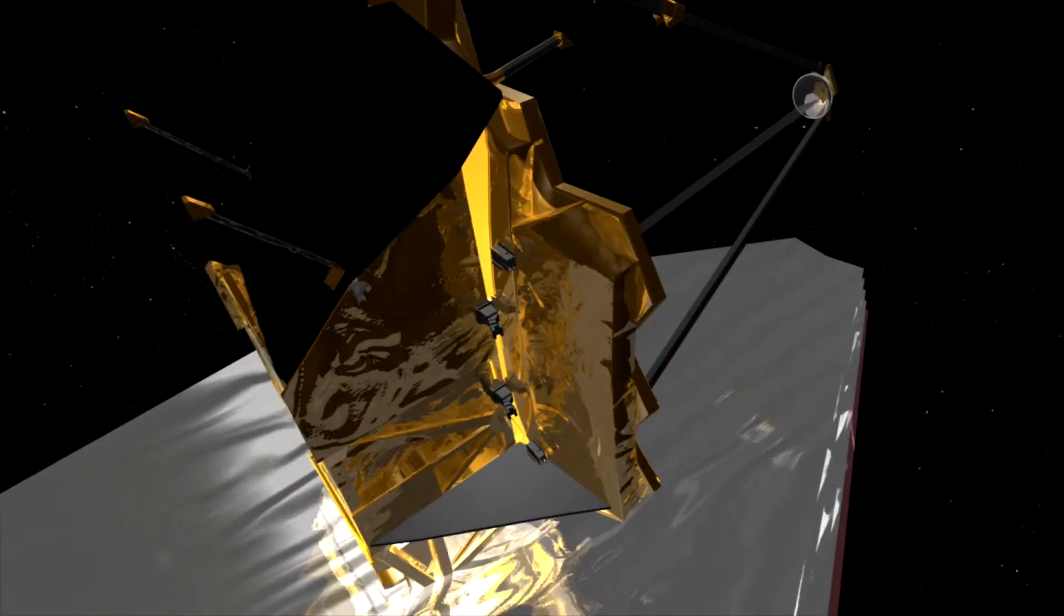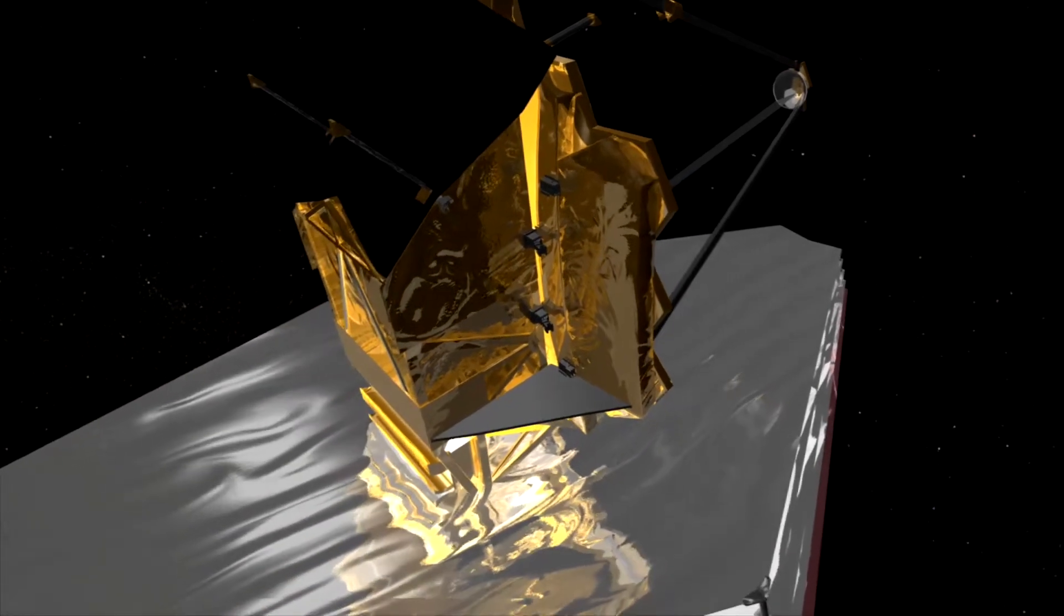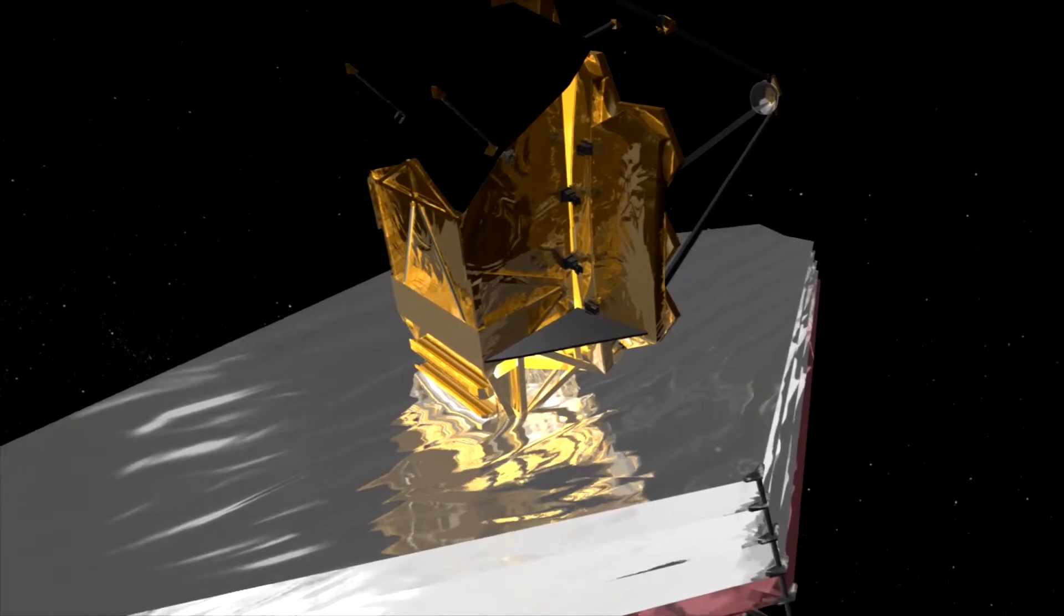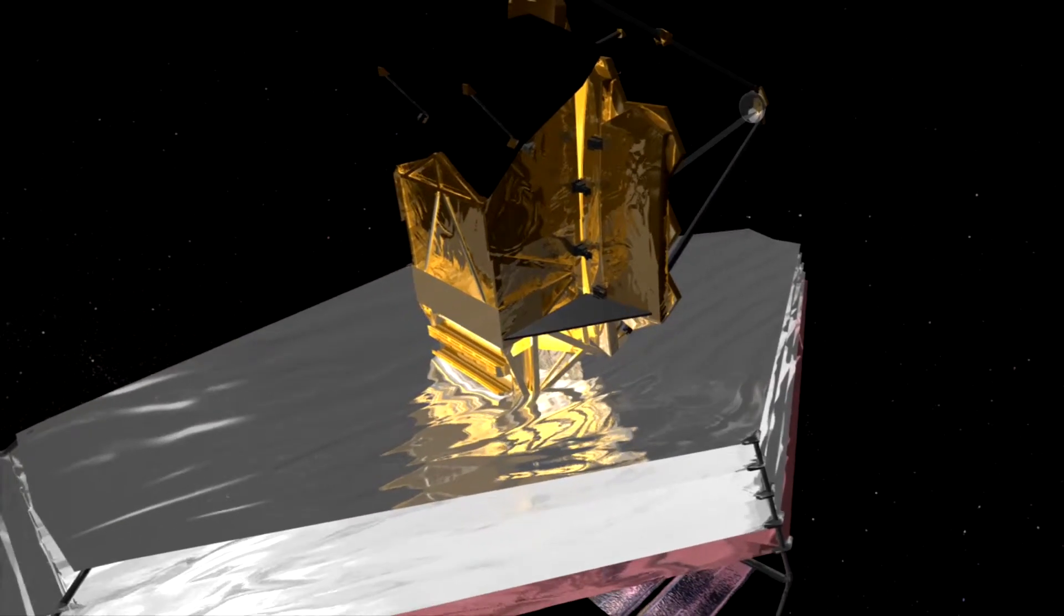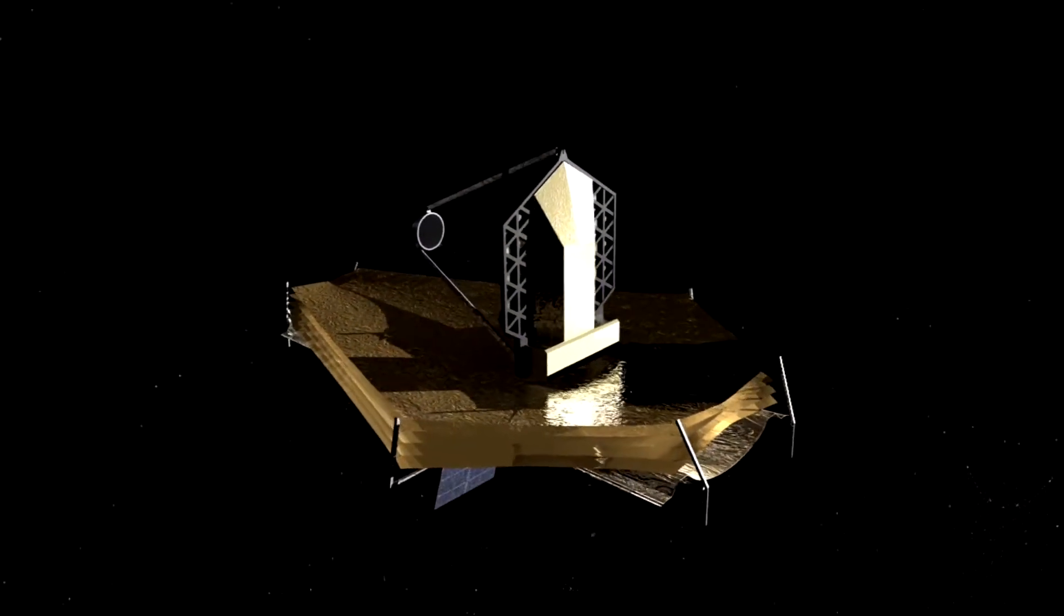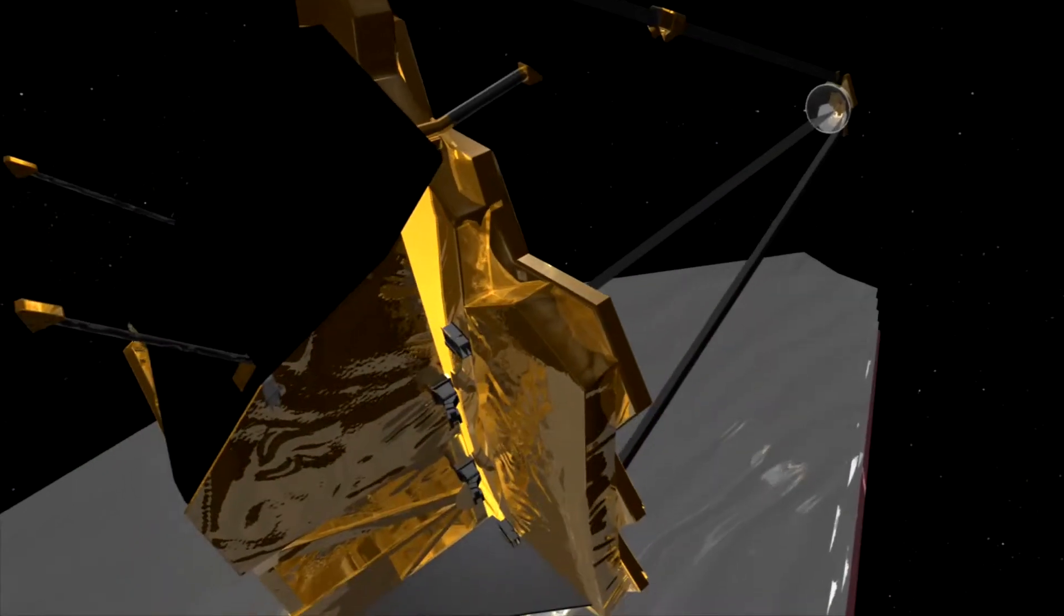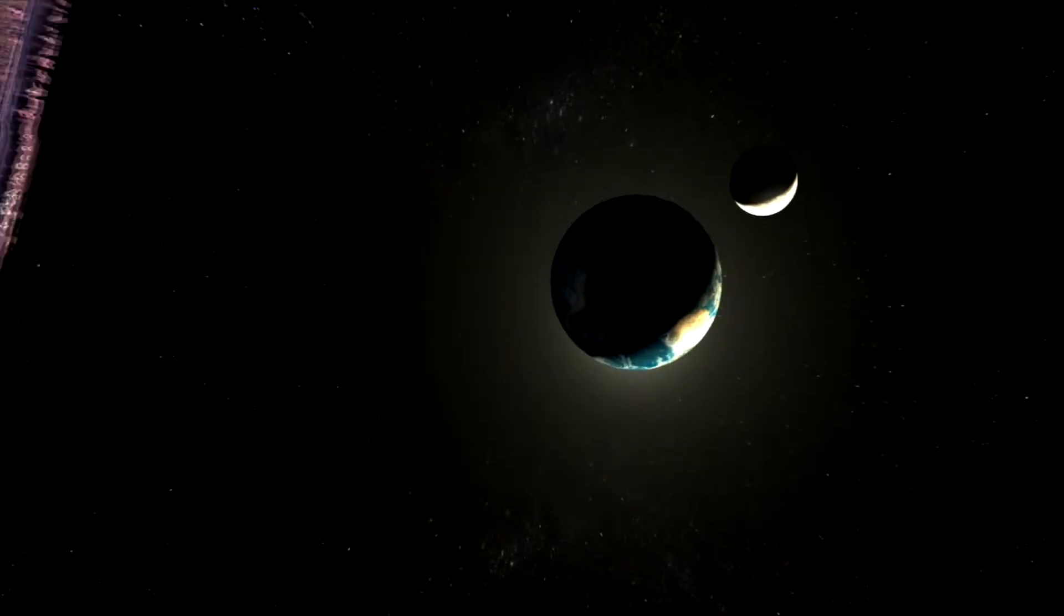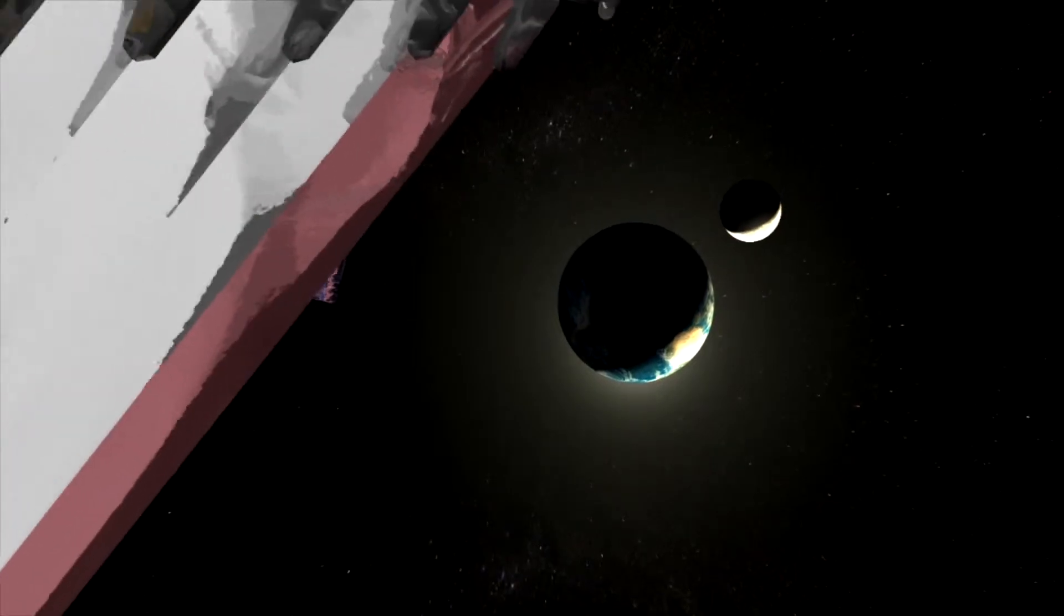A large sunshade keeps the optics and the low temperature instruments in permanent shadow, allowing them to operate near a whopping minus 233 degrees Celsius. The James Webb Space Telescope won't orbit the Earth. Instead, it will be parked 1.5 million kilometers from our planet in a wide orbit around the Sun.